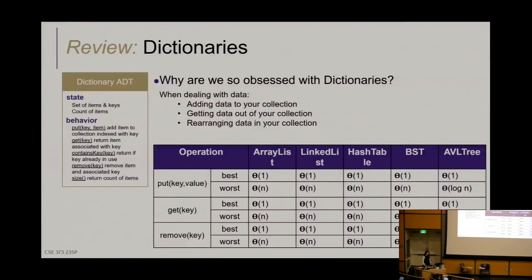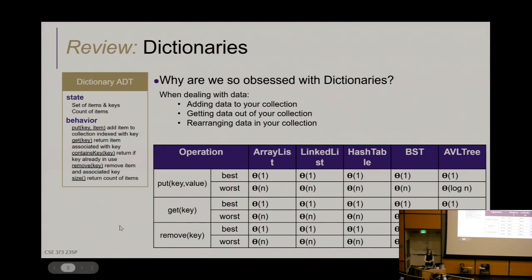These slides are a bit of a review. You should be comfortable knowing the runtimes for different ADT functions as implemented with different data structures. The most relevant is probably the dictionary. The runtimes for put, get, and remove are all pretty similar because all of them require finding the key. Put calls contains-key first to check for duplicates; get finds it; remove finds it too.